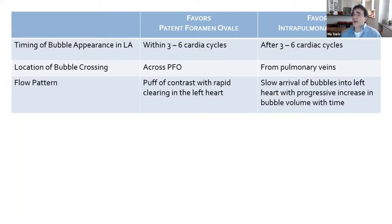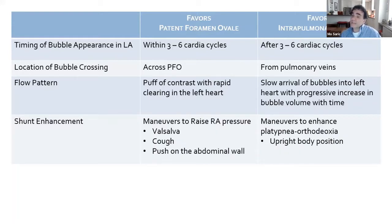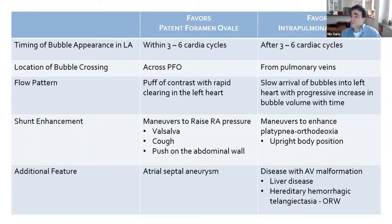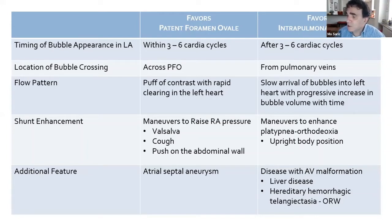Patent foramen ovale is characterized by puffs or boluses of contrast with rapid clearing in the left heart, resulting from only transient increases in right atrial pressure over left atrial pressure. Intrapulmonary shunt shows slow arrival of bubbles with progressive increase in bubble volume over time. PFO flow is enhanced by Valsalva, cough, or abdominal compression, while intrapulmonary shunt is favored by upright body position (orthodeoxia-platypnea syndrome). The presence of atrial septal aneurysm strongly favors PFO, while intrapulmonary shunt is associated with AV malformations such as liver disease or hereditary hemorrhagic telangiectasia.